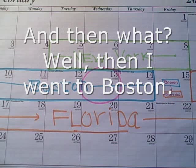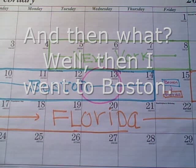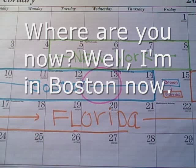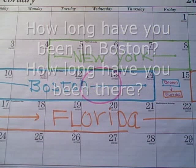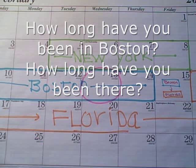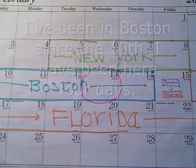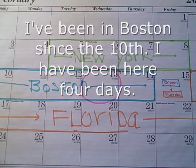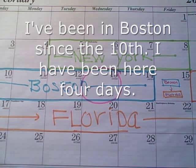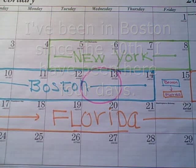And then what? Well, then I went to Boston. Where are you now? Well, I'm in Boston now. How long have you been in Boston? I've been in Boston since the 10th. I've been here four days. I've been in Boston for four days.